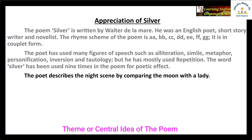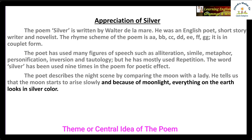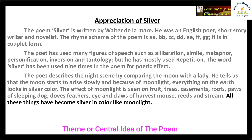The last point is theme or central idea. The poet describes the night scene by comparing the moon with a lady, and tells us that the moon starts to rise slowly and silently. Because of moonlight, everything on the earth looks silver in color. The effect of moonlight is seen on fruit trees, casements (windows), roofs, paws of a sleeping dog, feathers, eyes and claws of a harvest mouse, reeds, fish and stream.